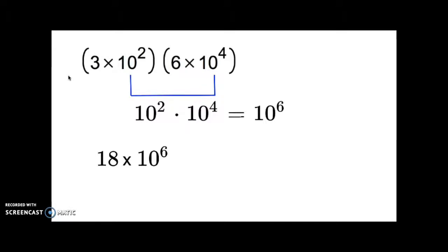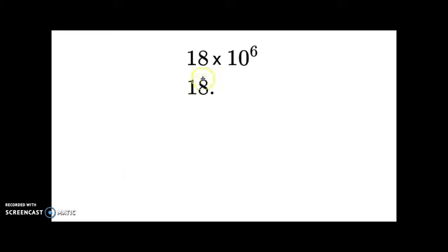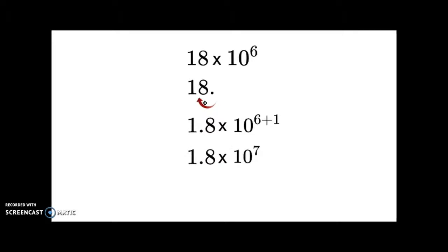Now we need to write that in scientific notation. It is not in scientific notation because 18 is larger than 10 — you must have a number between 1 and 10. There is a decimal point after the 8 in 18; we just don't normally write it. We're going to move the decimal place to the left one place, giving us 1.8, which is less than 10. When we go to the left, going to the left means we add 1 to the exponent; going to the right means we subtract 1. We only go over to the left once, so we add 1 to the 6th, and we get 1.8 times 10 to the 7th.